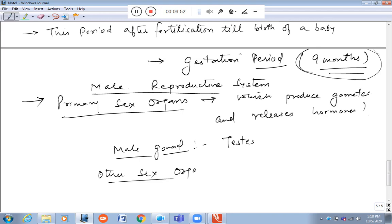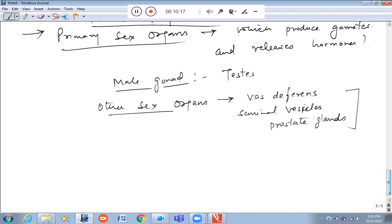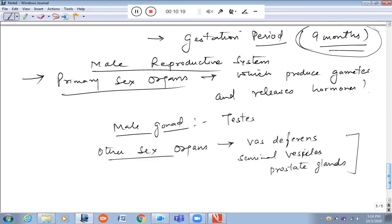Secondary sex organs include vas deferens, seminal vesicles, and prostate glands. All of these have important roles. Without these, the reproductive system cannot help in the process of fertilization.